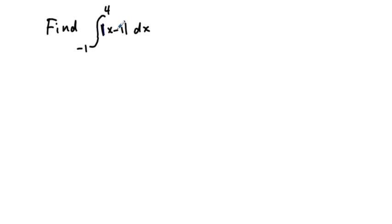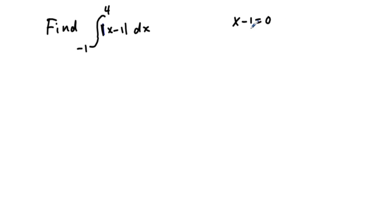To solve this, the value of the absolute value function can never be negative, so anything below the x-axis we're going to have to turn positive. To find where we have to turn the function positive, we need to find the zero by setting x minus 1 equal to 0. Adding 1 to both sides gives x equals 1.